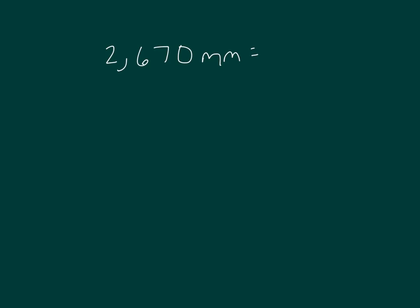Let's work through another problem. Here's 2,670 millimeters. Let's convert it to centimeters first. We take 2,670, and we divide by 10, where we get 267, which we can write as 2.67 times 10 squared.